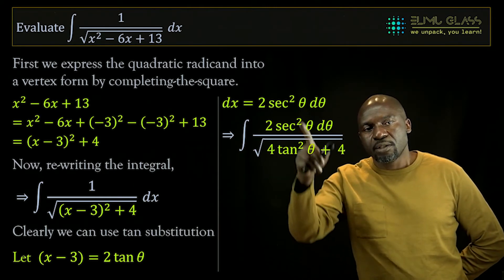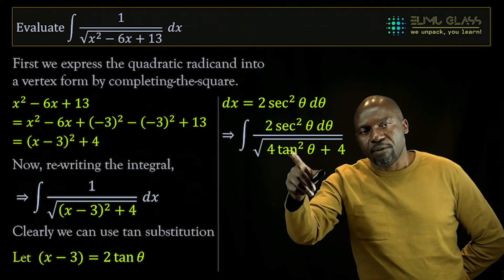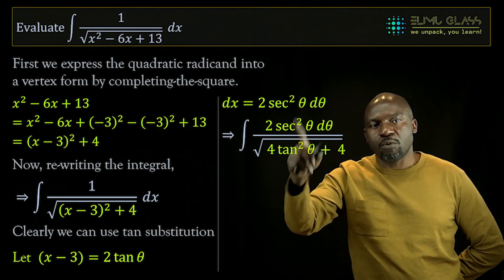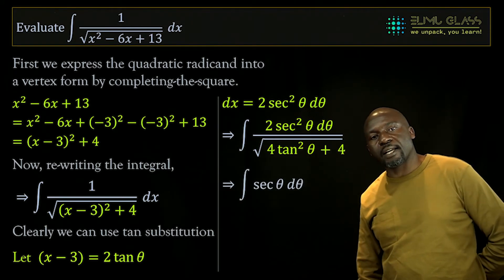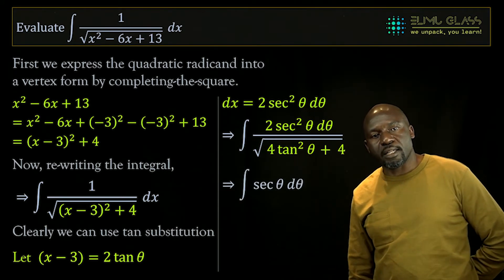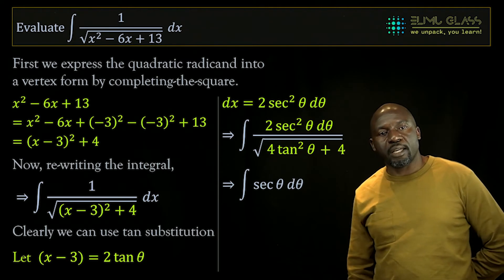If I find the root, I get sec, so sec squared of theta divided by sec of theta leaves me with just a single sec theta. So if I simplify that, I get sec theta d theta, and we've already found the integral of this.